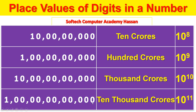Ones, tens, hundreds, thousands, ten thousands, lakhs, ten lakhs, crores, 10 crores, hundred crores, thousand crores — that is 10 to the power of 11.